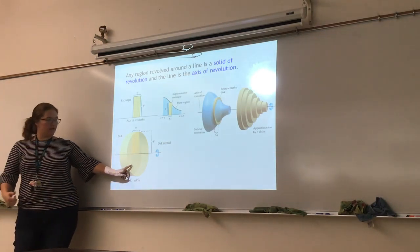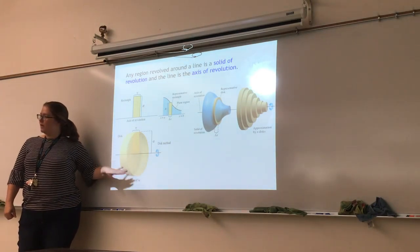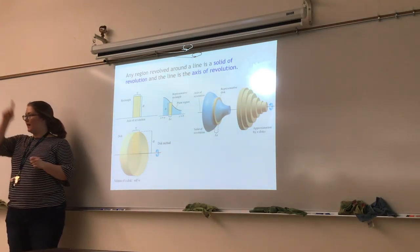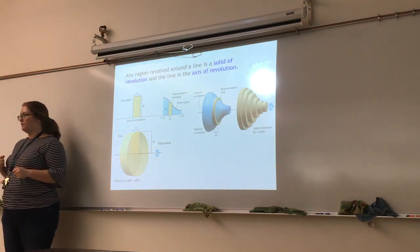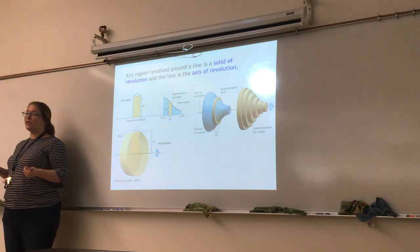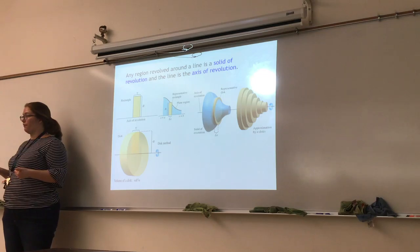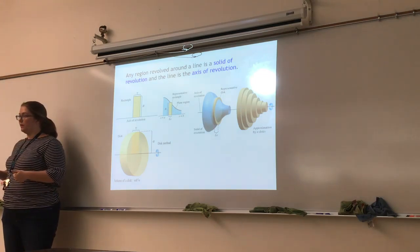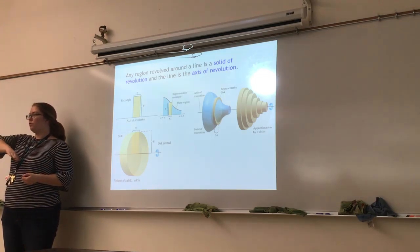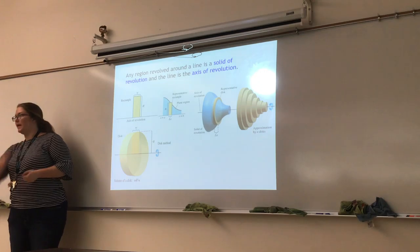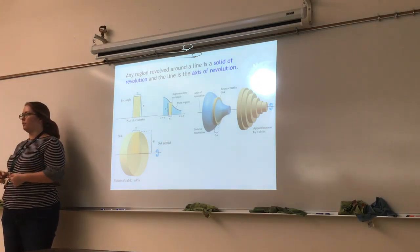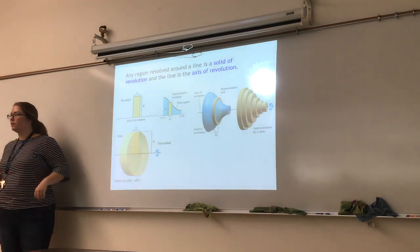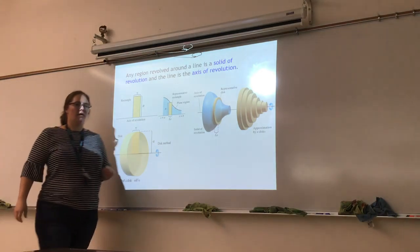It always goes one power up. When we were integrating a straight line, we could get area. But now when we integrate area, we'll get volume. We're using the area formula for a circle because when you spin around, you get a circle. As soon as you do that action of spinning on a fixed point, it always creates a circular shape.